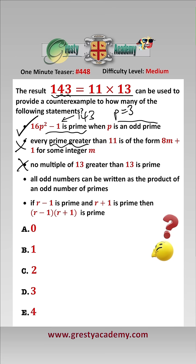For the fourth one, 143 is odd, and it can be written as the product of its two prime factors, 11 and 13, but there is not an odd number of primes — there's an even number of primes, 2: 11 and 13. So therefore 143 equals 11 times 13 can be a counterexample to that.